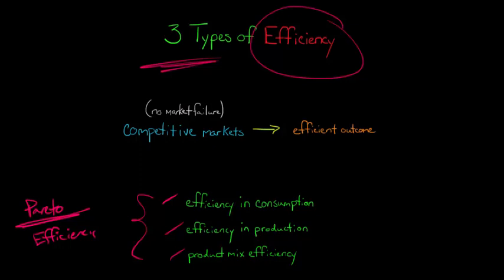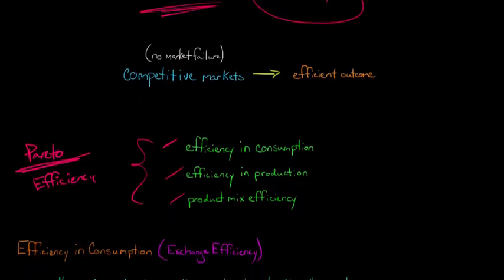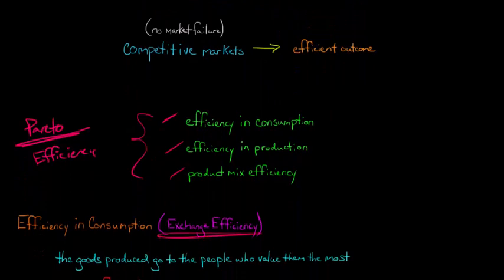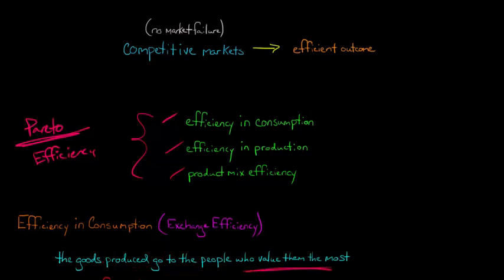Let's get back to our three types of efficiency. Starting with efficiency in consumption, which you'll sometimes see referred to as exchange efficiency. Exchange efficiency just means that the goods that are produced in the economy end up in the hands of the people who value them the most.